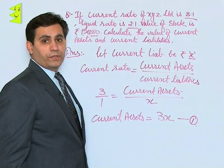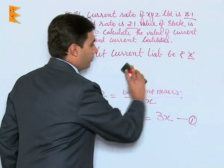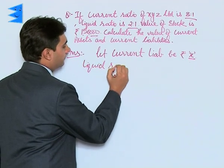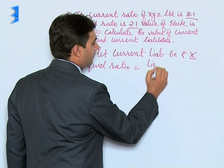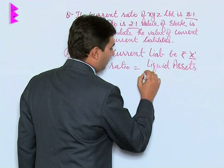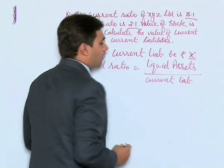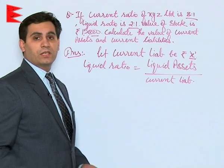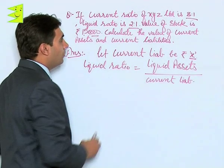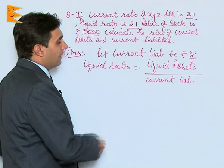The other part given is liquid ratio, which is 2:1. The formula for liquid ratio is: liquid ratio = liquid assets upon current liabilities. We will put 2:1 in place of liquid ratio and current liabilities as X.